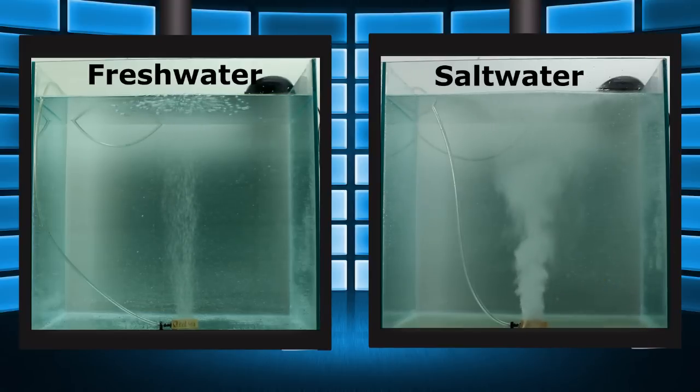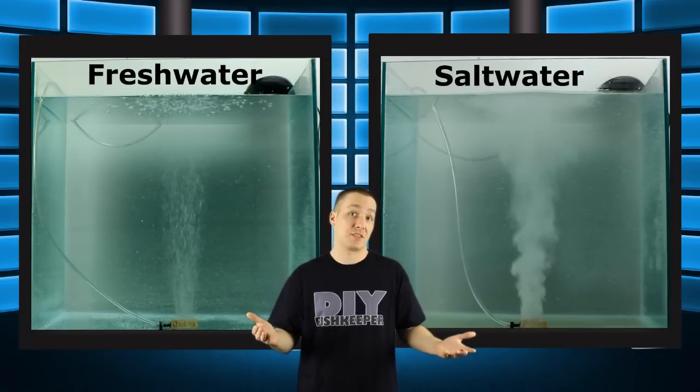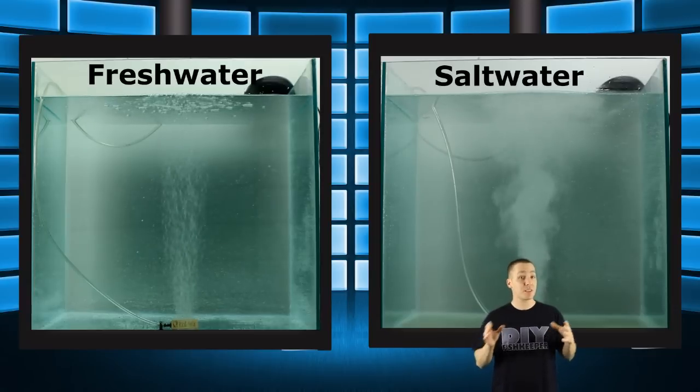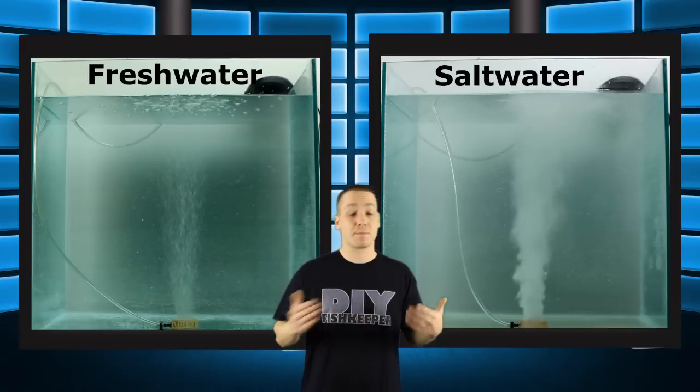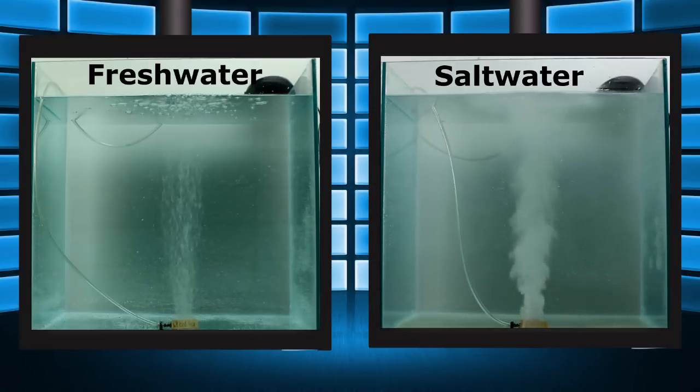So why is the freshwater producing regular bubbles you would expect to see, and the saltwater tank producing a massive cloud of tiny bubbles? Surface tension. The surface tension on the bubbles in the saltwater tank is much higher than in fresh, which dictates the size a bubble can be.